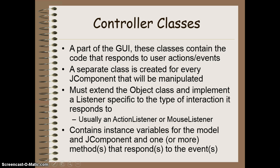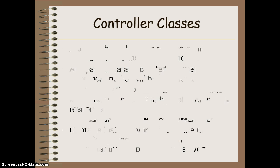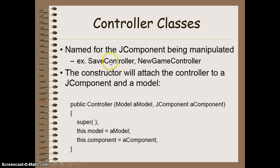The controller class also contains instance variables for the model so that I know where to manipulate the data once a component has been actioned upon. And it also contains an instance variable for the component so I can access data from the component itself that I can then use in my model. The controller class is named for the component that it would be manipulating — so for example I'd have a SaveController or a NewGameController. The constructor will attach the controller to the JComponent and the model. The parameters are going to be the model that I'm working with where I'm going to modify the data, and the component where I would get the data from on my view.